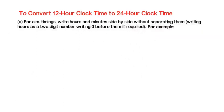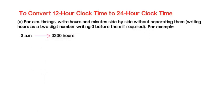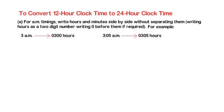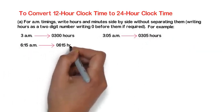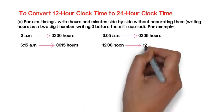For example, 3 a.m. 0300 hours, 3:05 a.m. 0305 hours, 6:15 a.m. 0615 hours, 12 noon, 1200 hours.